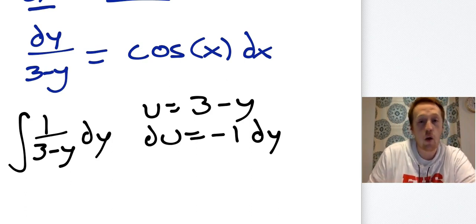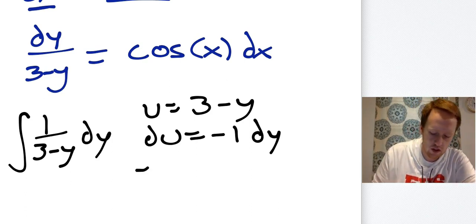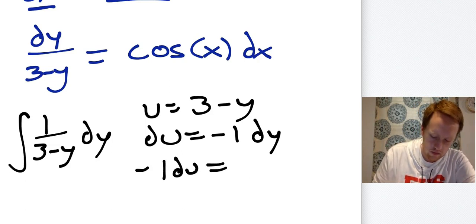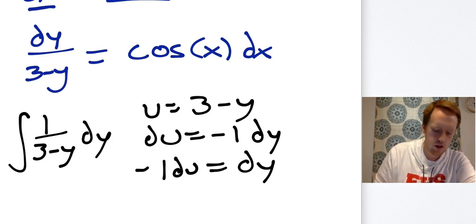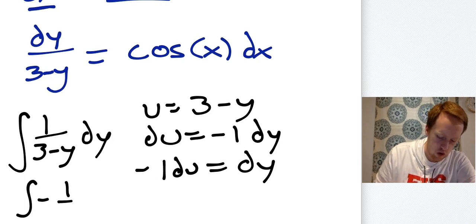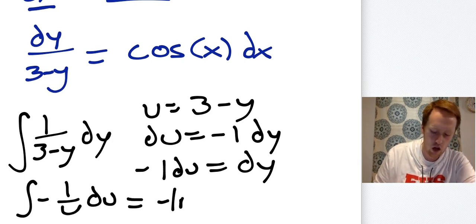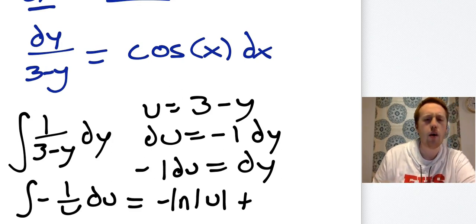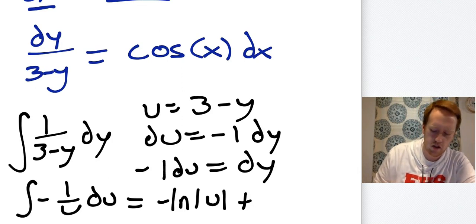Well, if I look at the integral that I have, I don't have that negative one. So I'll just move it to the other side. So then this becomes the integral of -1/u du, which is of course -ln|u| + c.